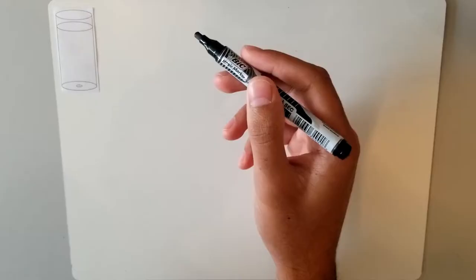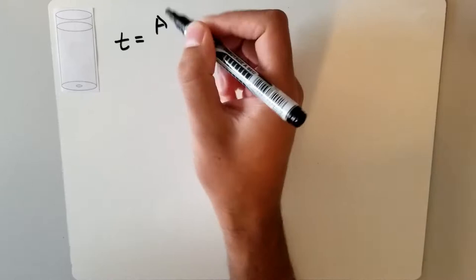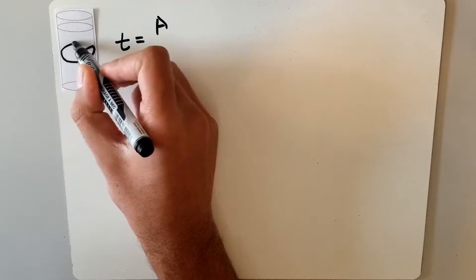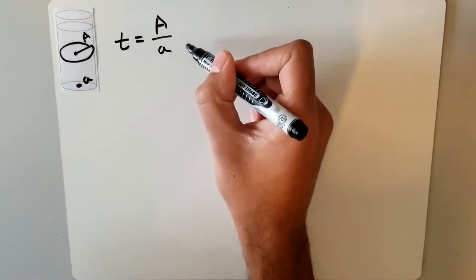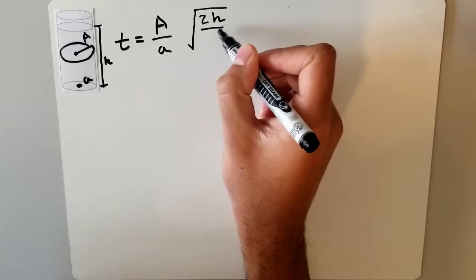The equation we're going to be focused on is t equals A, which is the area of the cross section of the container, over little a, which is the area of the hole, multiplied by the square root of two times the height of the water above the hole over gravity.